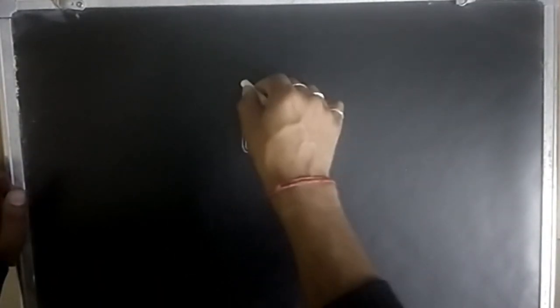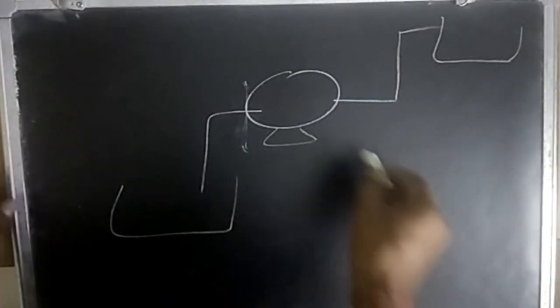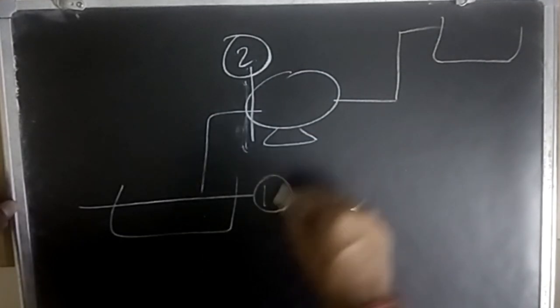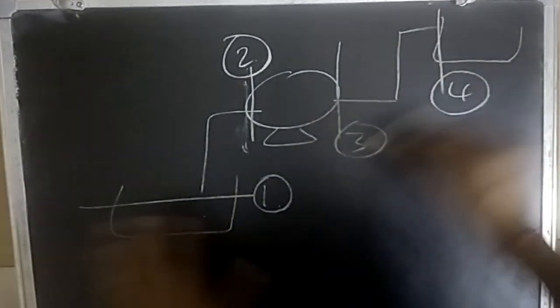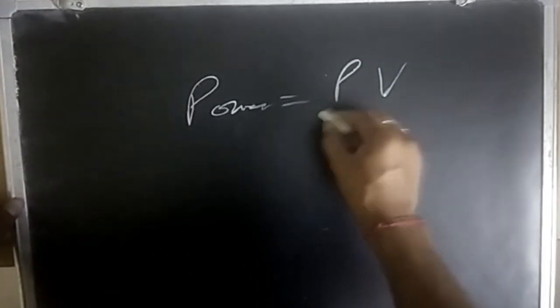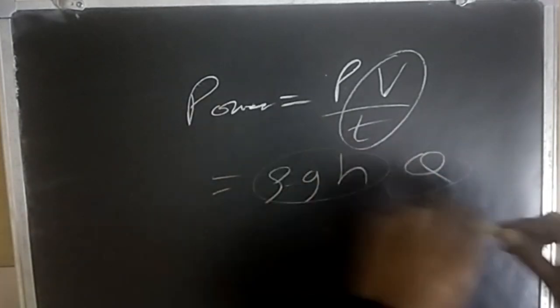For centrifugal pump problems, apply Bernoulli at inlet and outlet of the pump to find required quantities. Pump power = ρgHQ, derived from P = p·V/t = (ρgh)·Q.